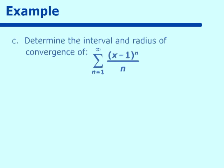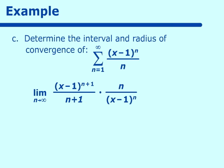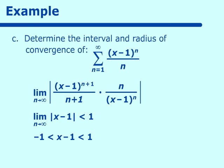Next: the series (x−1)^n over n. Using the ratio test, we take the limit as n approaches infinity of the absolute value of (x−1)^(n+1) over (n+1) times n over (x−1)^n. Reducing, (x−1)^(n+1) over (x−1)^n gives (x−1), and n over (n+1) approaches 1 as n goes to infinity. So we get the absolute value of (x−1) less than 1, meaning x is between 0 and 2.